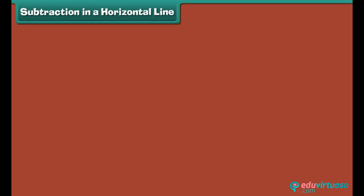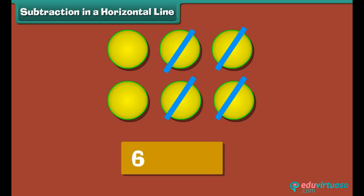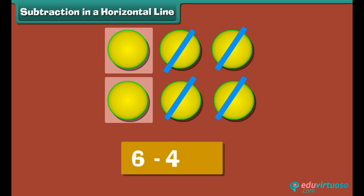Subtraction in a horizontal line. Let us now use dots to subtract numbers horizontally. To subtract four from six, we place six dots. Strike off four dots. Two dots remain. Therefore, two is the answer.